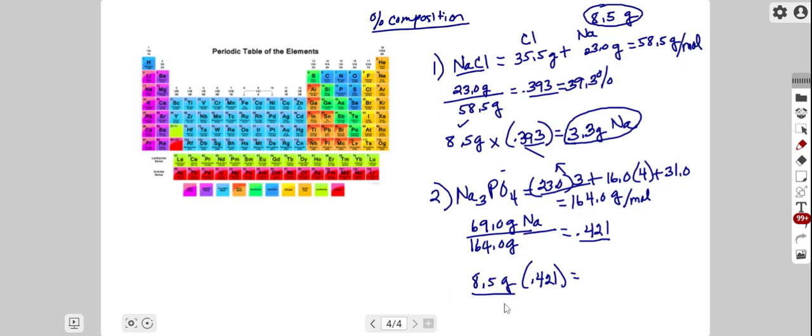We have an 8.5 gram sample size, multiplied by the fraction of sodium in that sample. We end up getting 3.6 grams of sodium present in the sodium phosphate sample, very similar to what we saw with sodium chloride.